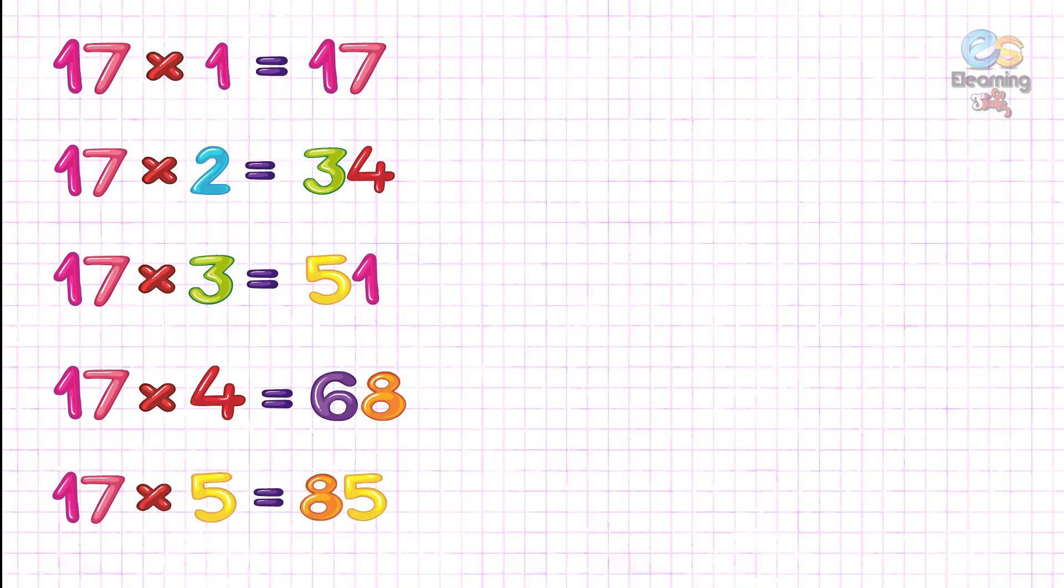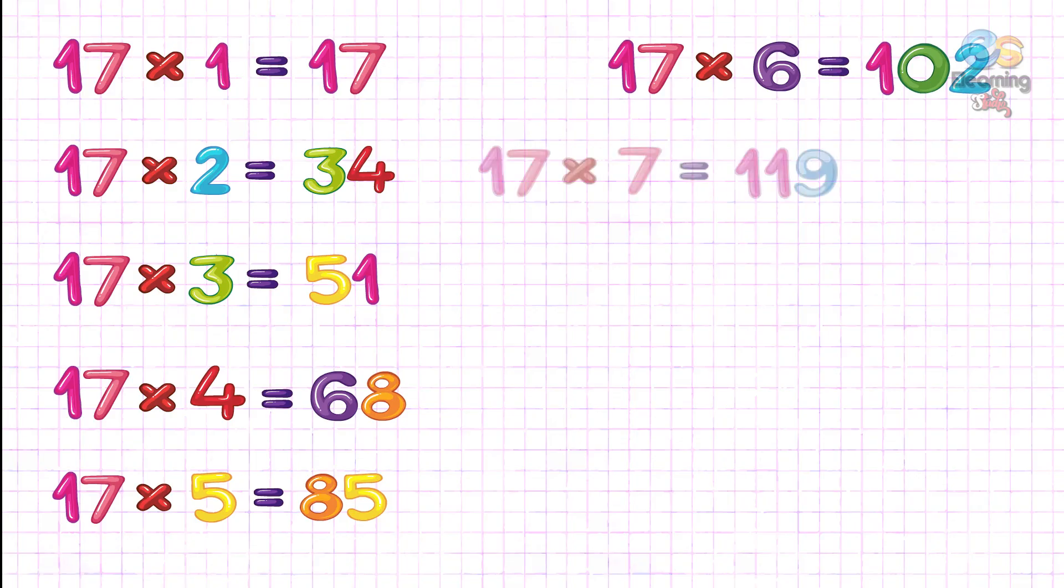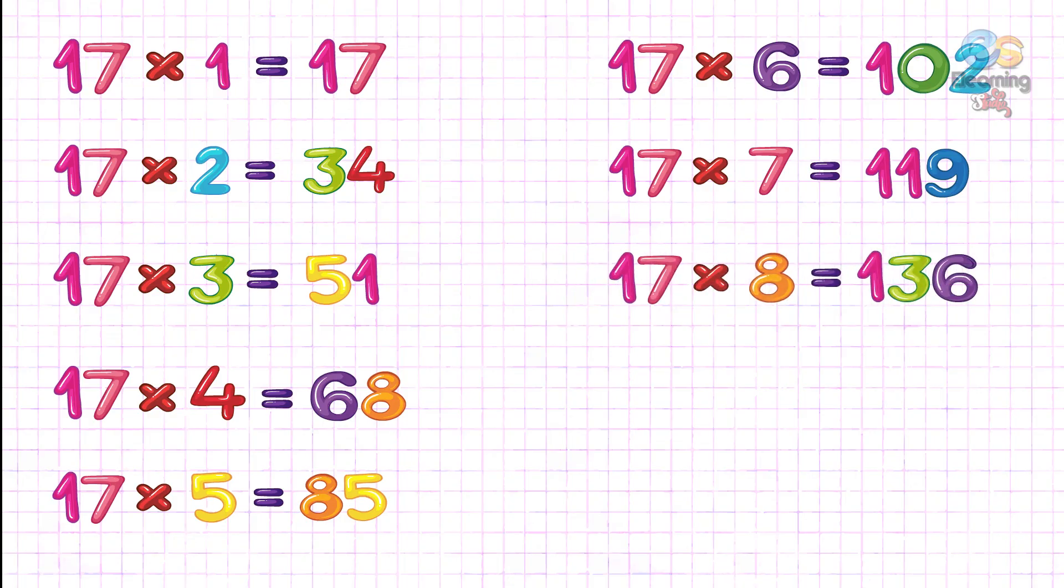17 fives are? 85. 17 sixes are? 102. 17 sevens are? 119. 17 eights are? 136.